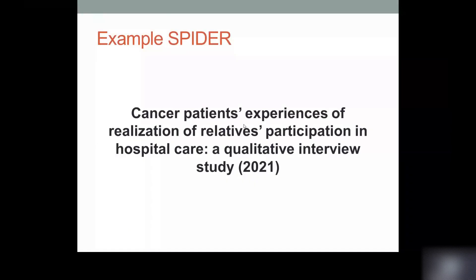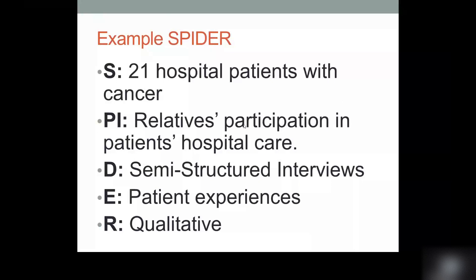As an example, we have the following paper which we're going to put a SPIDER together for. This is from 2021 and it's titled 'Cancer patients' experiences of realisation of relatives' participation in hospital care: a qualitative interview study.' The SPIDER for this paper would have S for sample: 21 hospital patients with cancer. The PI would be relatives' participation in patient hospital care. The design is semi-structured interviews. The evaluation is patient experiences, and the research type is qualitative.